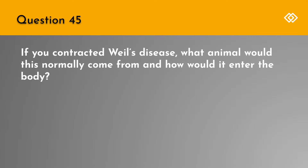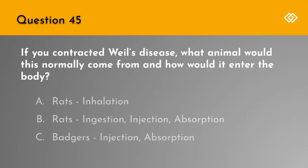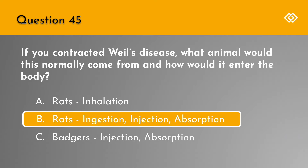Question 45. If you contracted Weil's disease, what animal would this normally come from and how would it enter the body? A. Rats through inhalation. B. Rats through ingestion, injection or absorption. Or C. Badgers through injection or absorption. The correct answer is B. Rats through ingestion, injection or absorption.